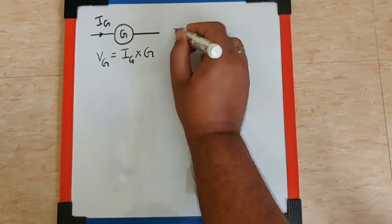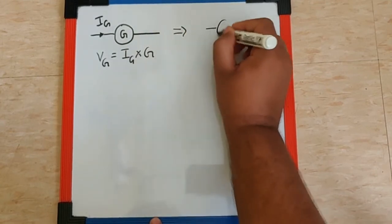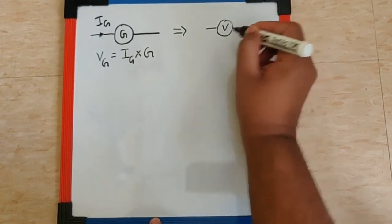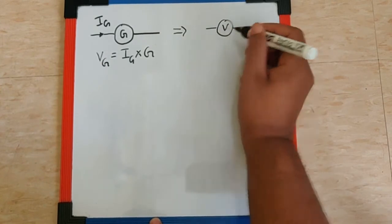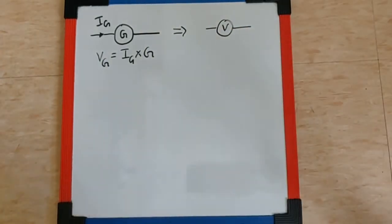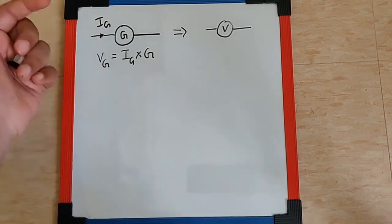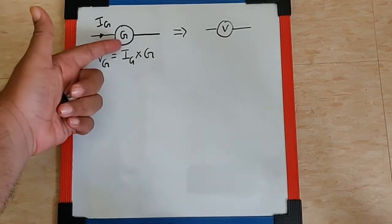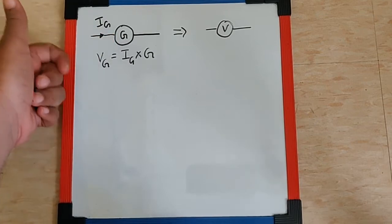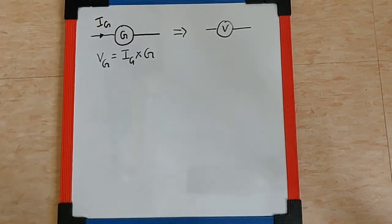Now we want to convert this into a voltmeter. Now voltmeter can measure potential difference across the devices, which even a galvanometer can do because by current and galvanometer resistance, we can multiply and find the potential difference across something.